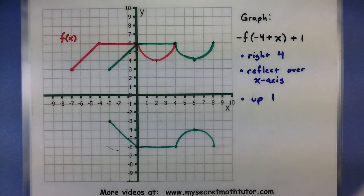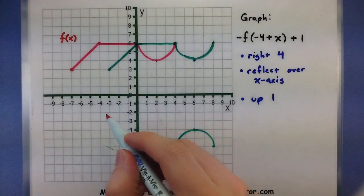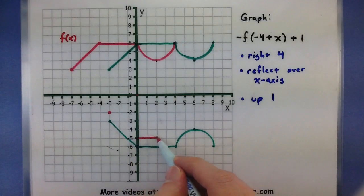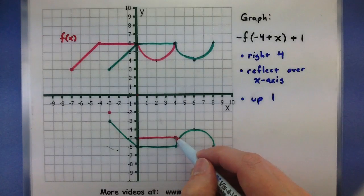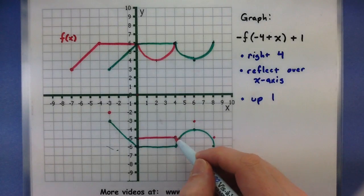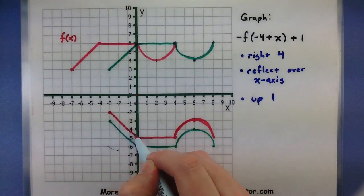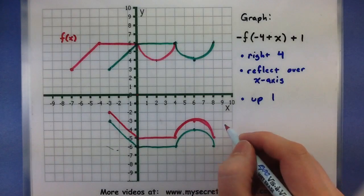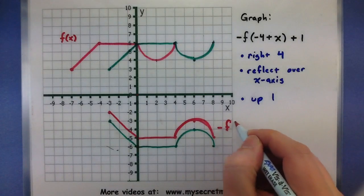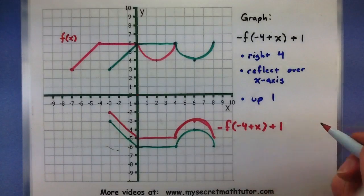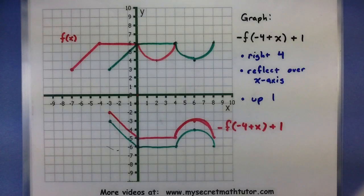One last transformation to go, and that's everything will be moved up by 1. So this guy's moved up by 1, this guy's moved up by 1. Got our straight line here. Here's our 1 spot there, 1 spot there, 1 spot there. Here we go. So this new one down here represents our -f(-4 + x) + 1. So just like that you can apply many different transformations and come up with new graphs, but again they look pretty much the same as the original. I'll see you next time.